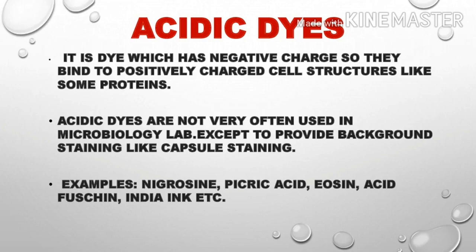Acidic dyes have a negative charge, so they bind to positively charged cell structures like proteins. Acidic dyes are not very often used in microbiology labs, except to provide background staining like in capsule staining. Examples include nigrosin, picric acid, eosin, and acid fuchsin.